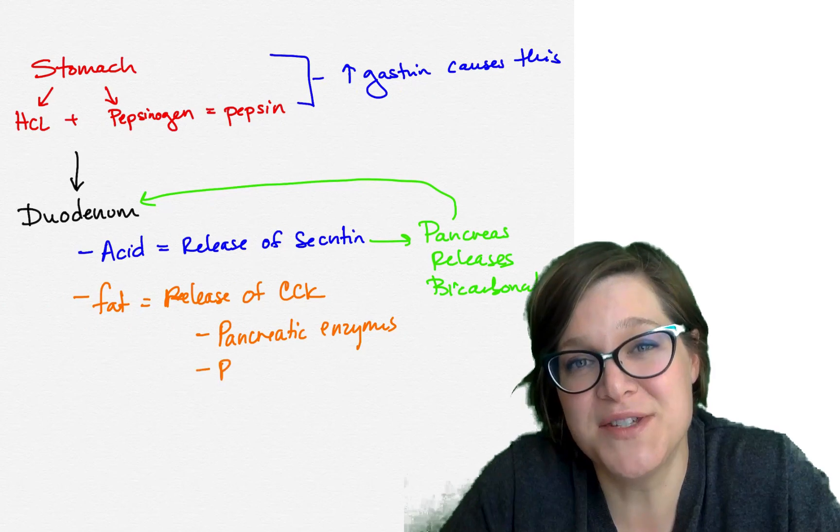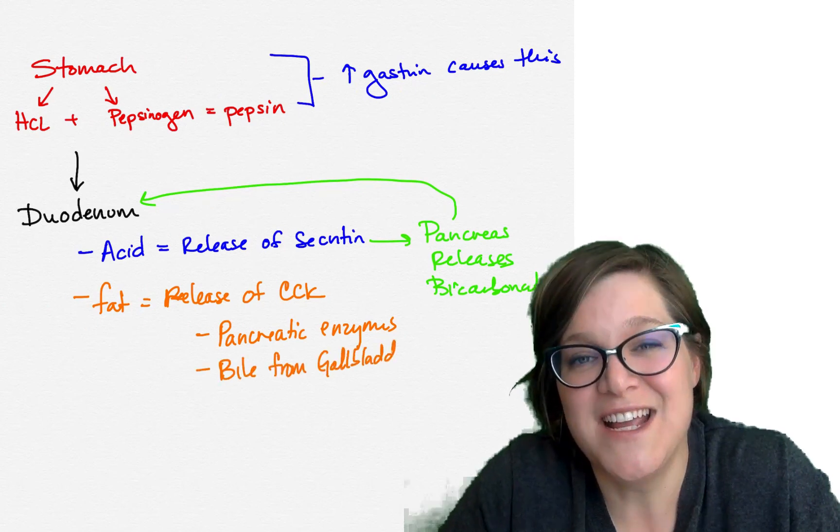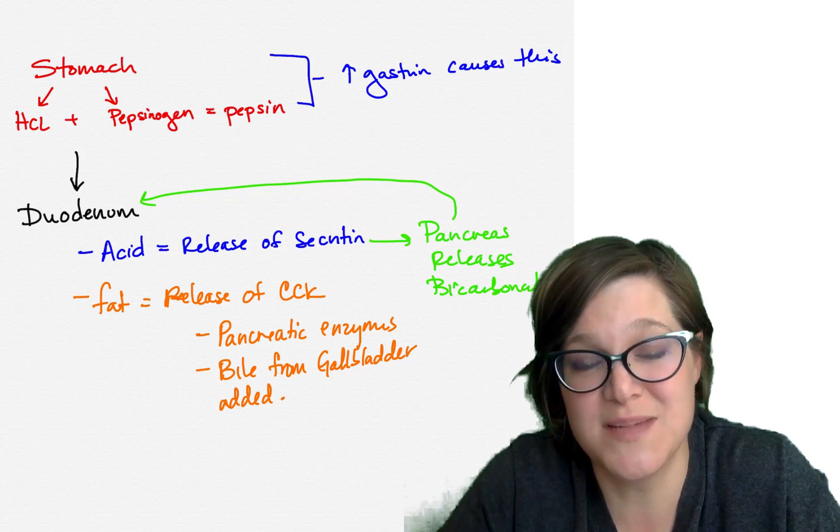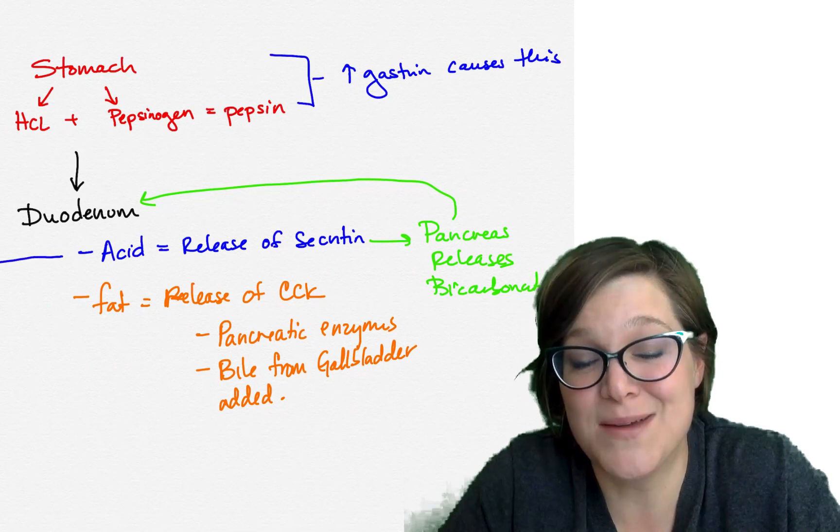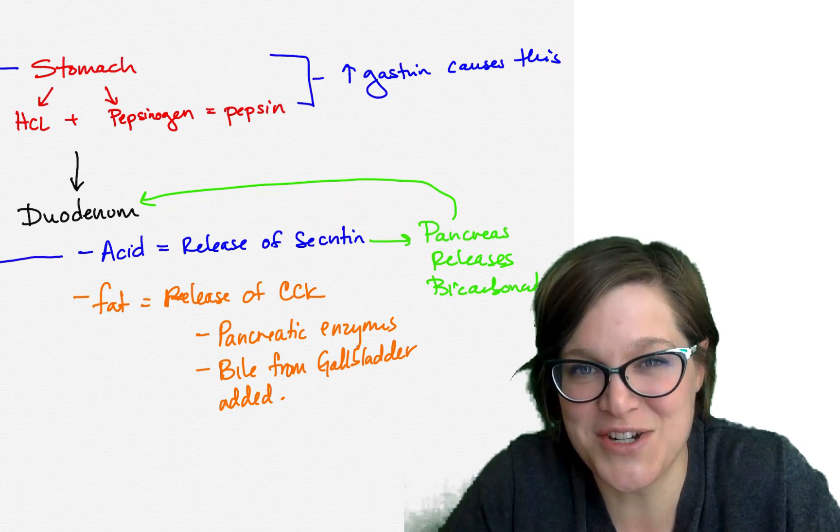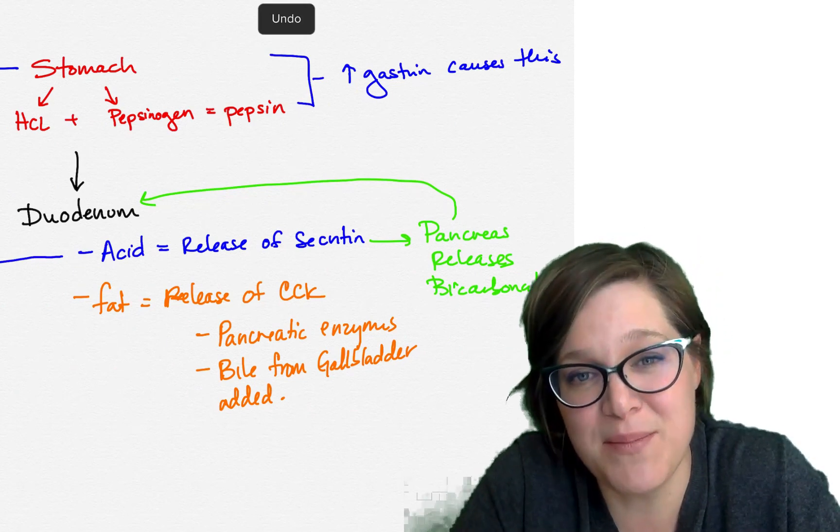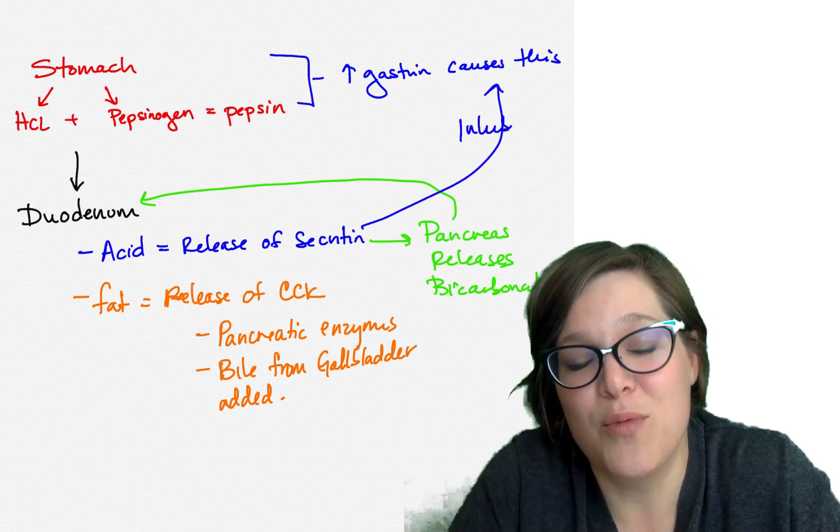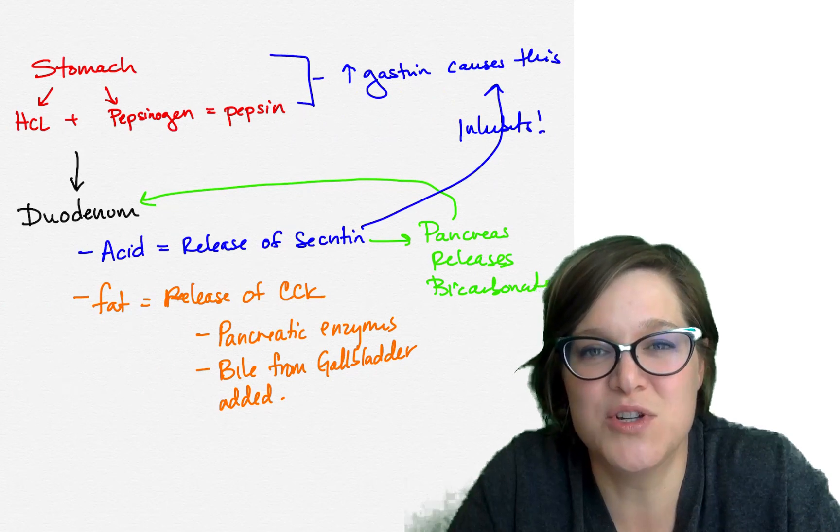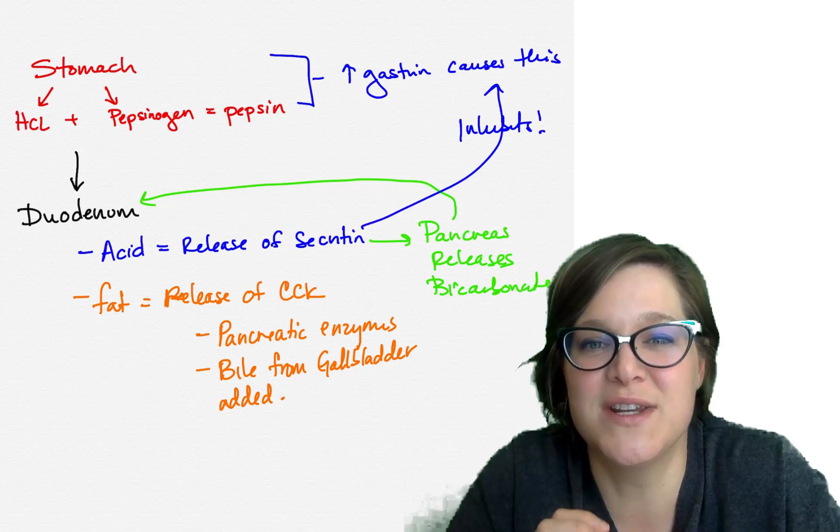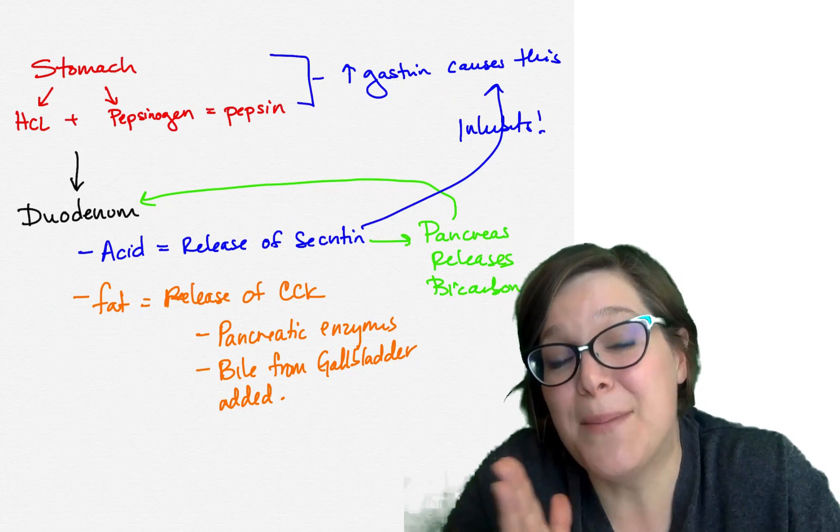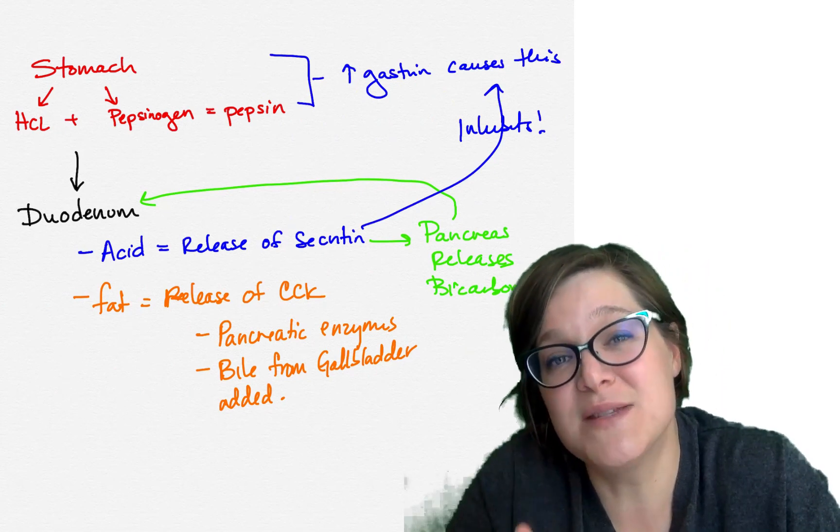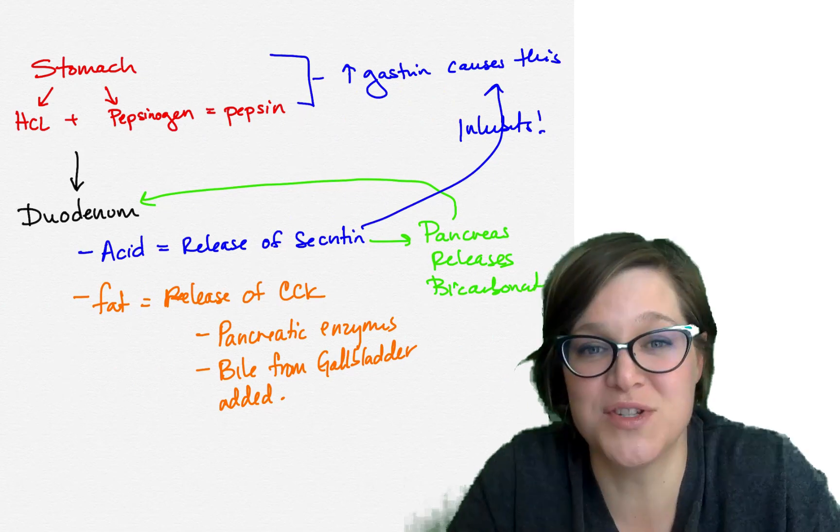And that bile is going to emulsify the fats, breaking them into smaller chunks. It's also going to cause the pancreas to contract. That pancreatic contraction is going to release pancreatic enzymes. One of those enzymes is lipase, which is going to be involved in the digestion of those fats. It's important to remember that secretin inhibits the release of gastrin. So at this point, not only are we getting ready for what's going to go on in the intestines, which is the enzymatic breakdown of this material so that it can be absorbed, but we're also stopping the previous steps. We're stopping the stomach from making more acid because we don't need that now. The material has moved on. It's in the intestines now.